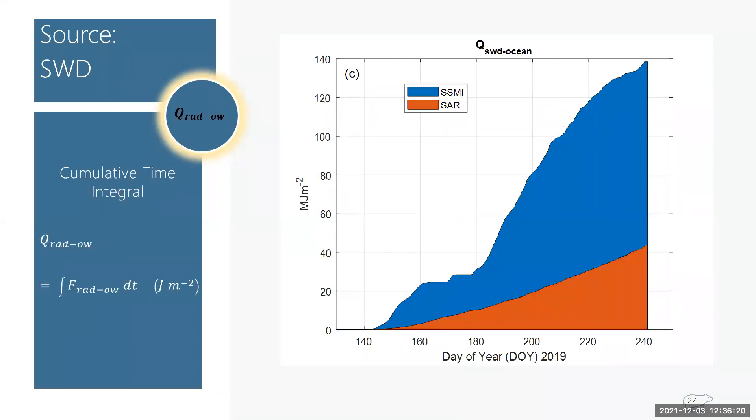So for the seasonal totals, this flux is integrated through time using this formula. And the y axis shows the seasonal totals in megajoules per square meter. And you can really tell here the difference in open water fraction that was in A results in a large seasonal difference between SSMI in blue and SAR in orange. Where SSMI estimated almost 140 megajoules per square meter entering through open water, but SAR estimated just over 40 megajoules per square meter.